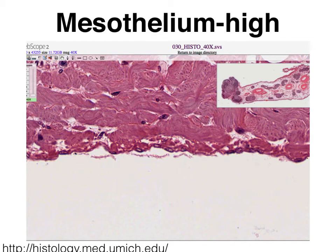Here we're using the 40x objective lens for a total magnification of 400. And this time we can very nicely see the flat nuclei and the flattened cells called the squamous cells that form our simple squamous epithelium. Because of its location, it's referred to as mesothelium. So the name of the tissue is called simple squamous epithelial tissue, but the name of the layer is referred to as the mesothelium.